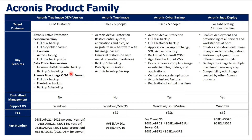The Data Protection version offers advanced backup features — incremental and differential backup with advanced scheduling options — with an easy-to-use interface and no image backup required. Acronix True Image OEM for Server is based on Acronix True Image and supports factory reset features for server manufacturers and system builders. Acronix True Image is usually for fewer than 5 users, and Acronix Cyber Backup is usually for more than 5 users. Acronix Snap Deploy is usually for lab testing or production lines, enabling deployment and provisioning of all servers and workstations at once, creating and deploying disk images to multiple machines in one easy step, with compatibility with images created by other Acronix products.